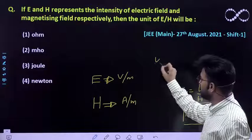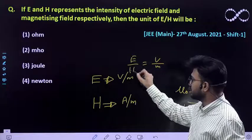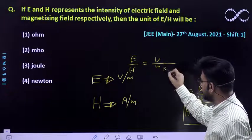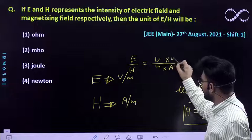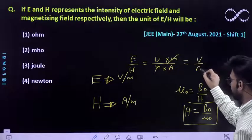So the ratio E/H is given by (volt per meter) divided by (ampere per meter). The meters cancel out, and you get volt per ampere.